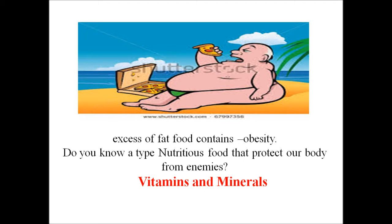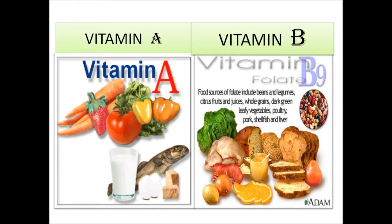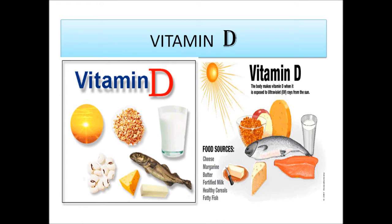Children, do you know what type of nutrients protect our body from diseases? These are vitamins and minerals. Vitamins help in protecting our body against diseases. They also keep our eyes, bones, teeth, and gums healthy. Our body needs vitamins A, B, C, and D. Vitamin A keeps our skin and eyes healthy. Vitamin C helps our body to fight against many diseases and helps our body use calcium for bones and teeth.